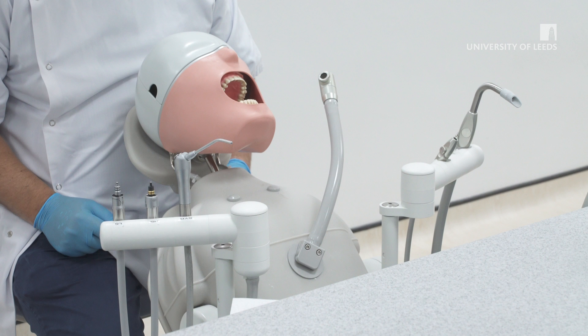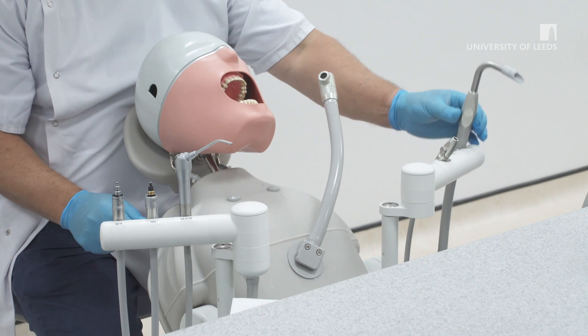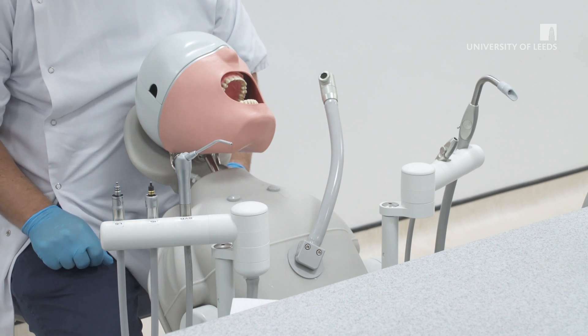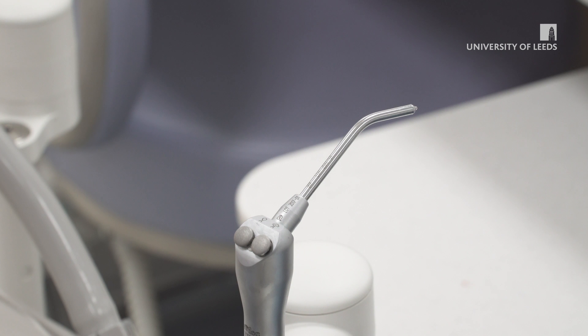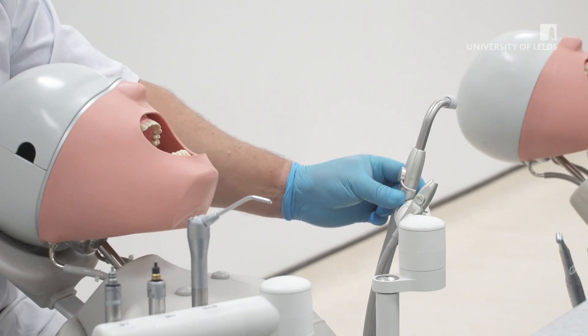On your unit, you will have four printable items you will use after you switch the unit on: the 3-in-1, HV suction, low speed handpiece, and high speed handpiece. The 3-in-1 is permanently attached to the unit and has two buttons, one for air and one for water. Press both to get a mist.